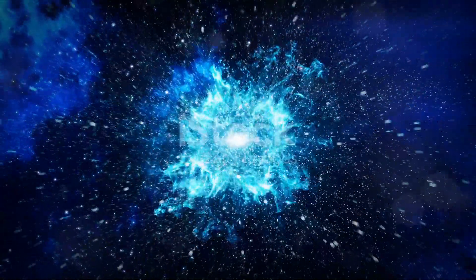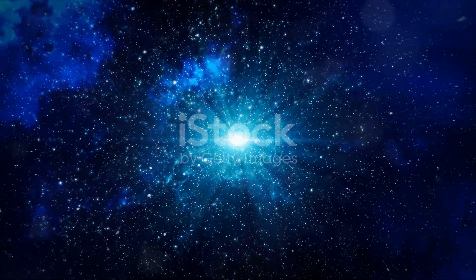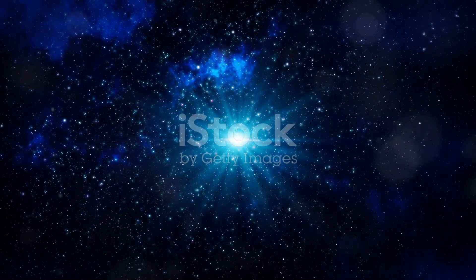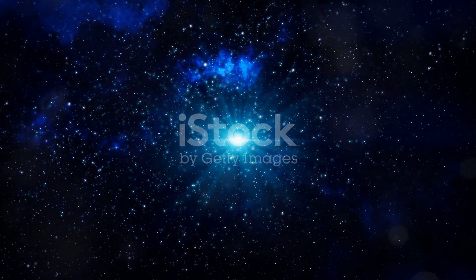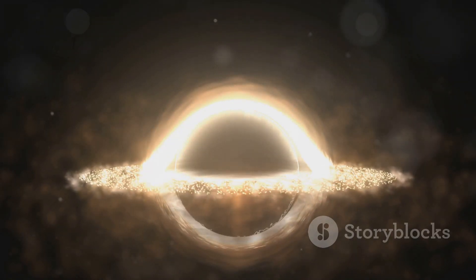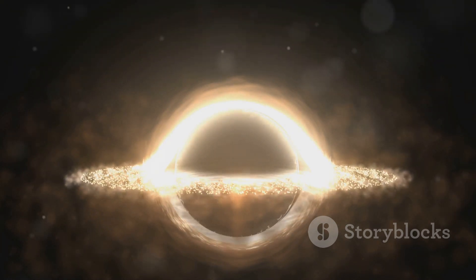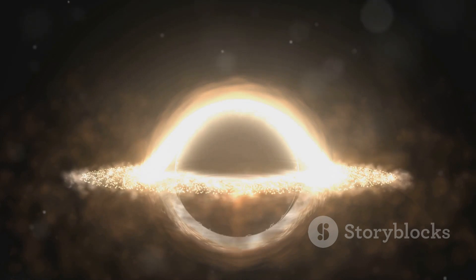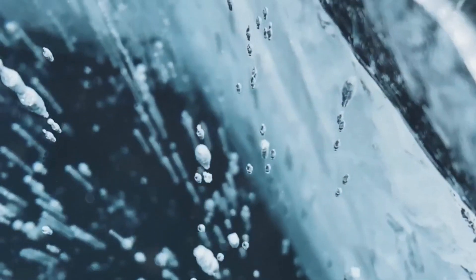But imagine black holes forming much earlier, just moments after the Big Bang. This was a time when the universe was incredibly hot and dense, a far cry from the vast cold expanse we see today. That's how primordial black holes are born. These ancient black holes are thought to have formed from the extreme conditions present in the early universe, long before stars and galaxies existed. The early universe was a chaotic soup of energy and particles. It was a time of rapid expansion and cooling, where matter and antimatter collided and annihilated each other, leaving behind a small excess of matter that would eventually form everything we see today.